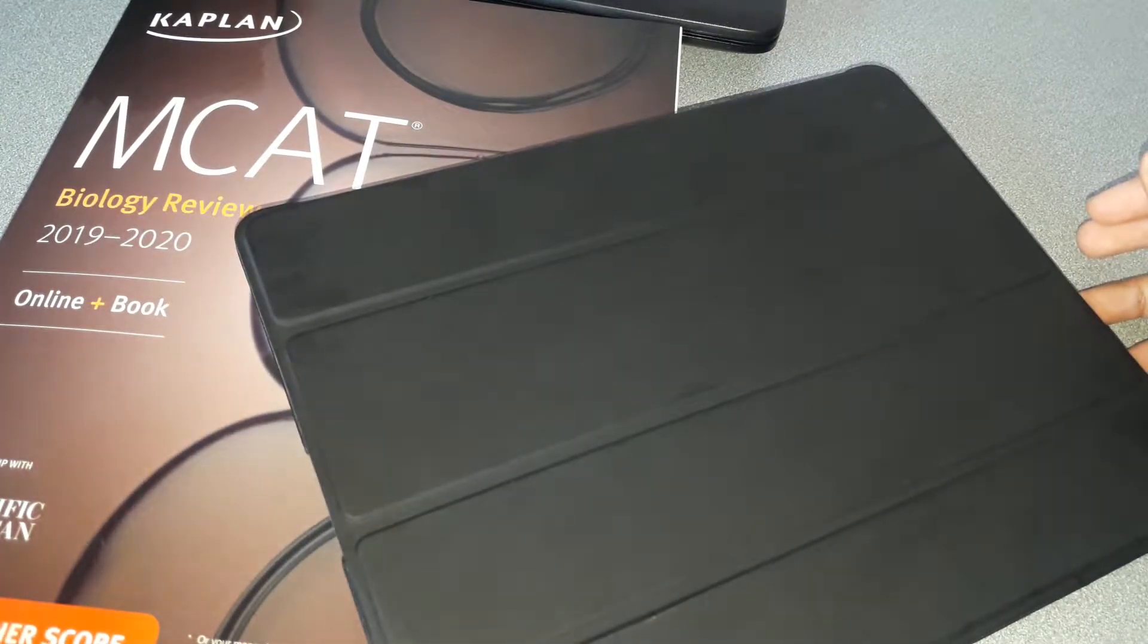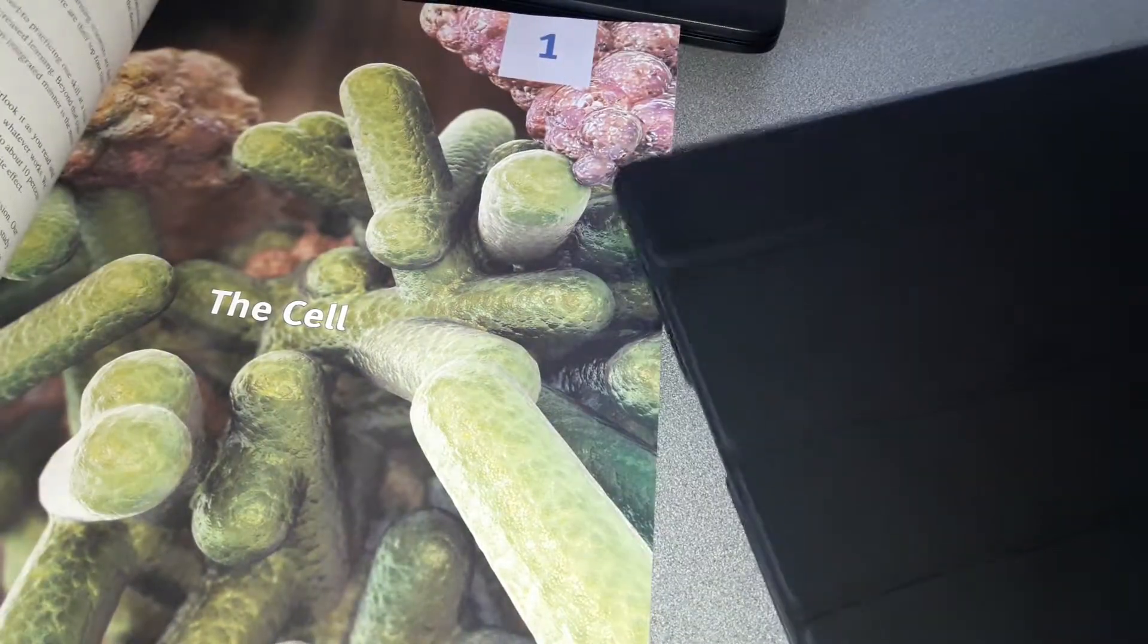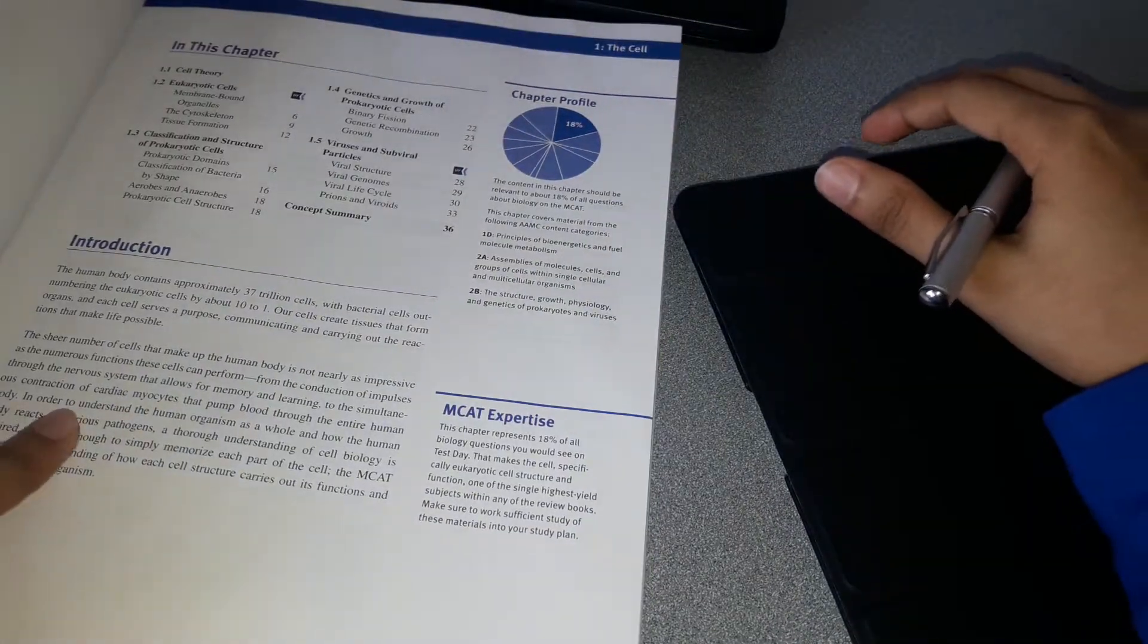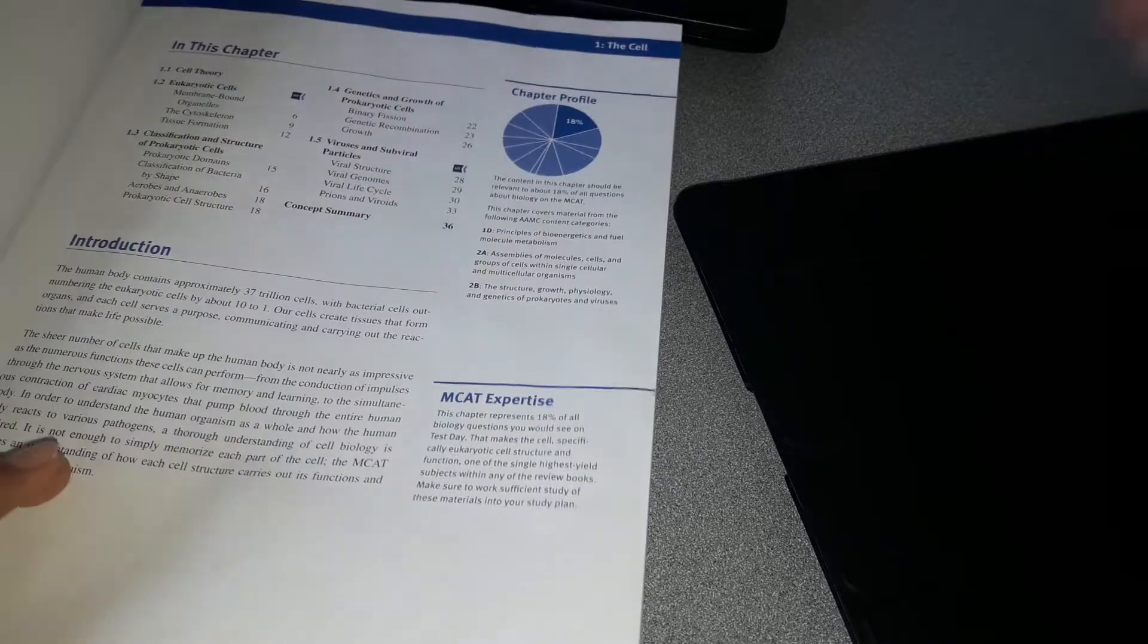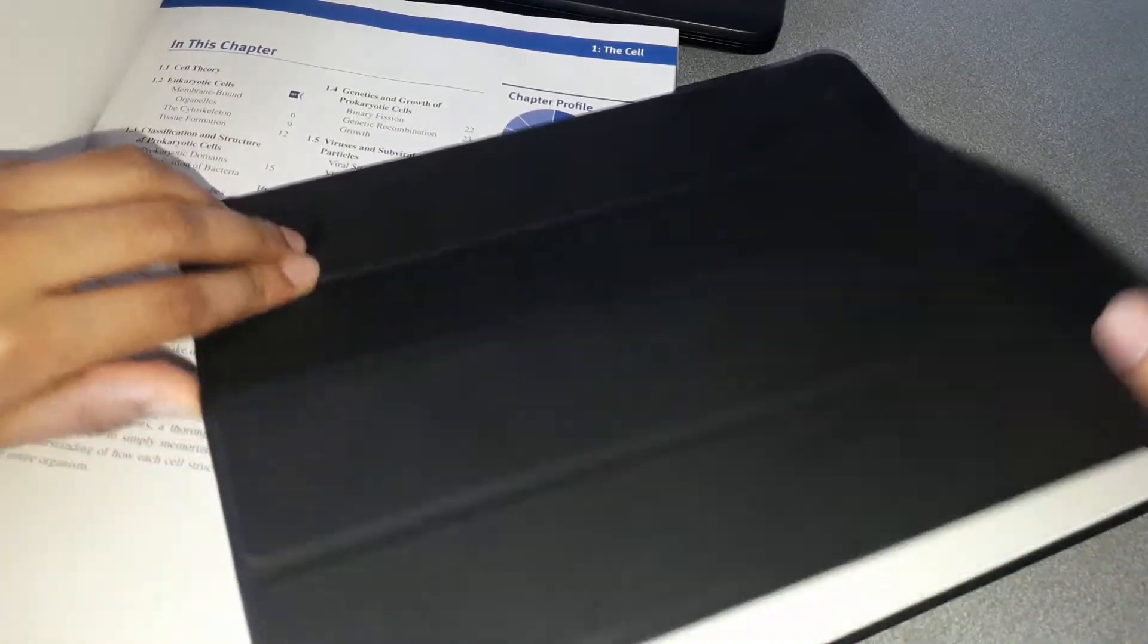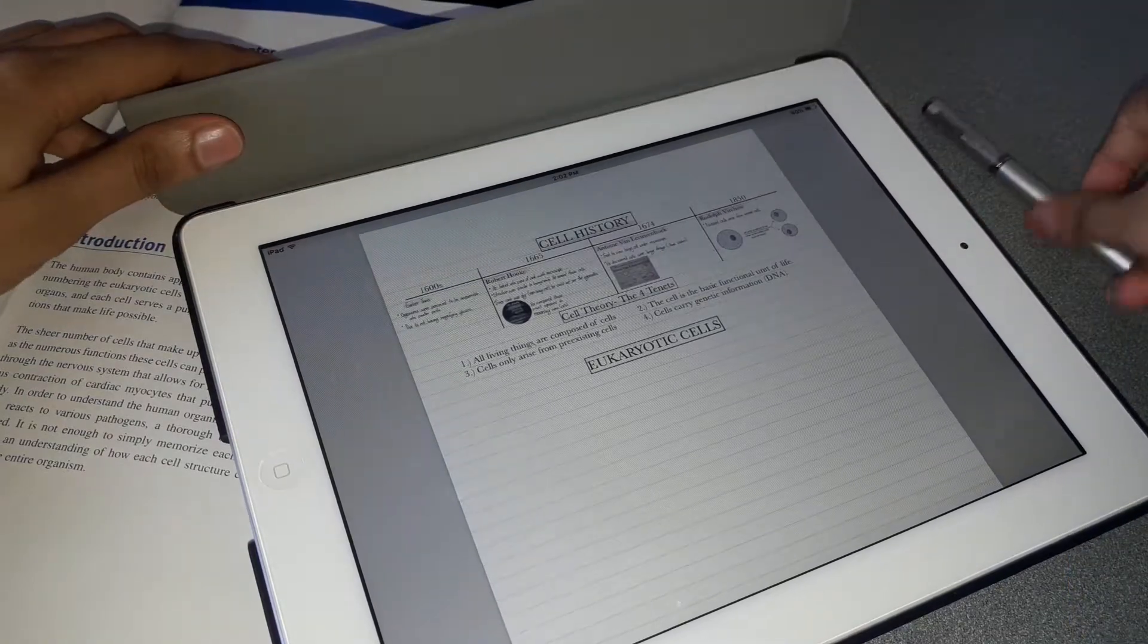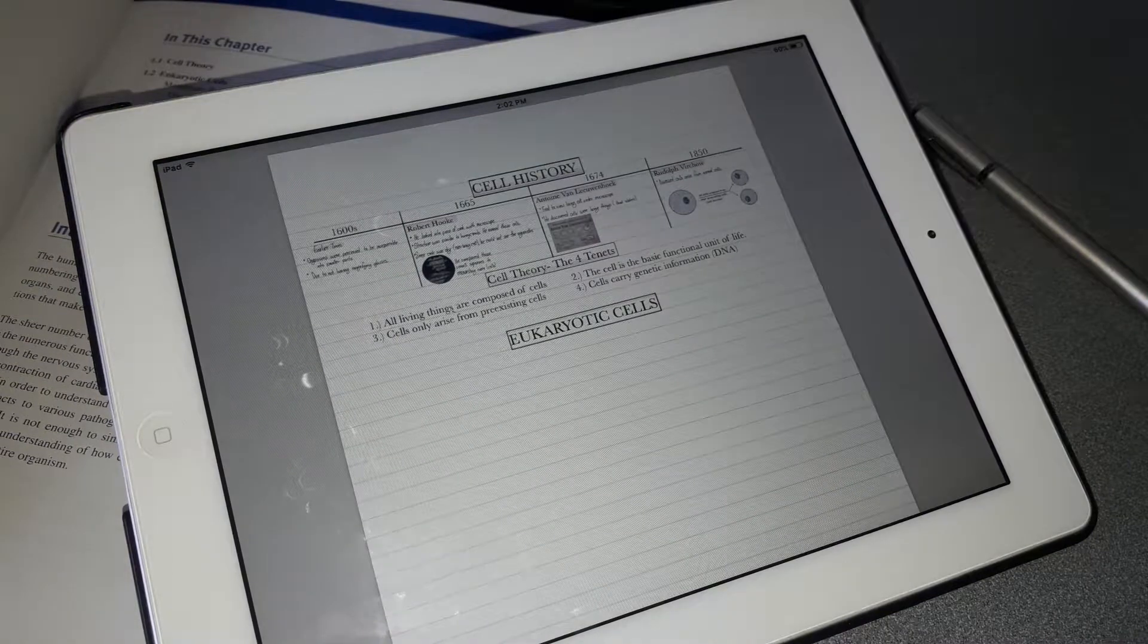The first subject I chose is biology. In this video, I'll be going over Chapter 1, Section 1, which is on the cell. Section 1 covers the history of the cell from the beginning up until now. I've taken notes - if you want a PDF of my notes, please comment down below and I'll link a downloadable PDF that you can print out.